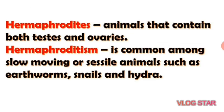Hermaphrodites are animals that contain both testes and ovaries. Hermaphroditism is common in slow-moving or sessile animals such as earthworms, snails, and Hydra. As mentioned earlier, Hydra and earthworms can reproduce asexually, but they can also reproduce sexually — these are called hermaphroditic animals.